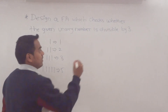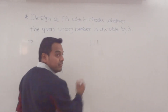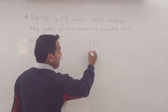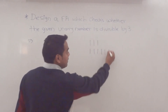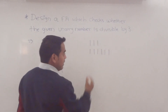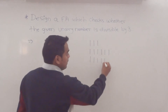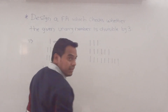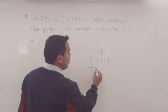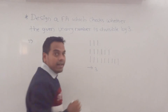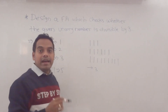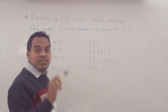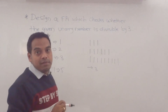We have to design the finite automaton in such a way that it accepts numbers divisible by 3, like 3, 6, 9 — multiples of 3. The finite automaton accepts only those unary numbers which are divisible by 3.